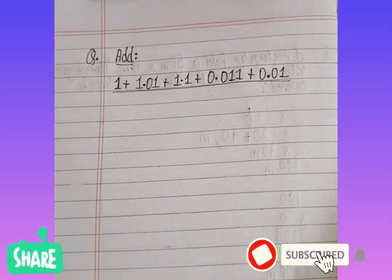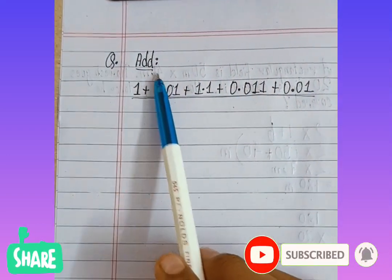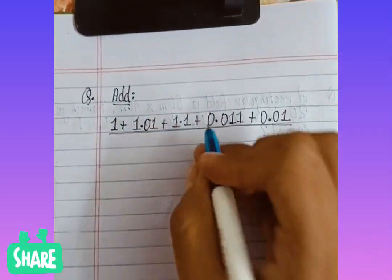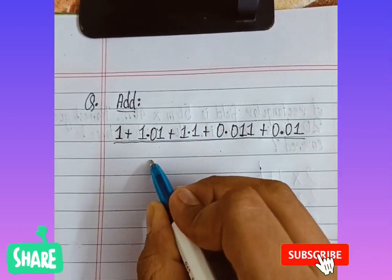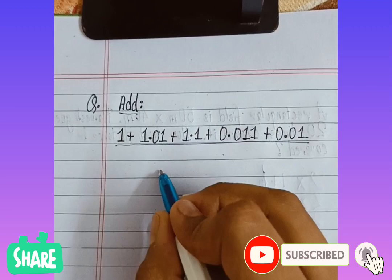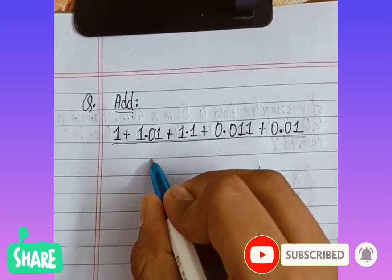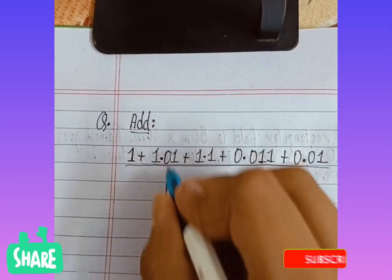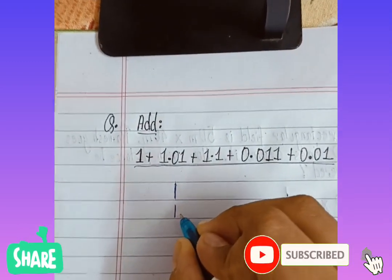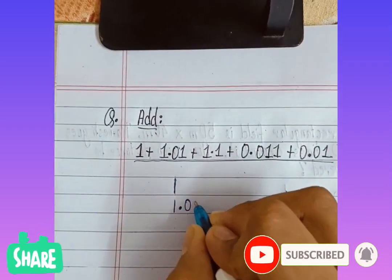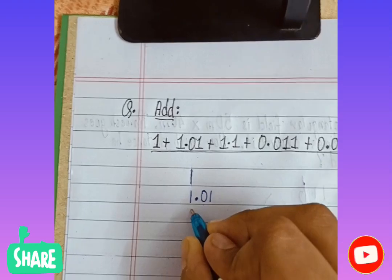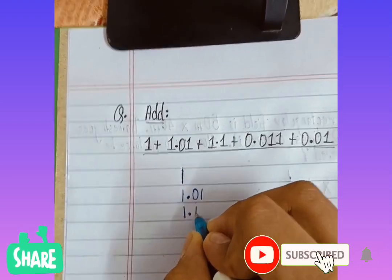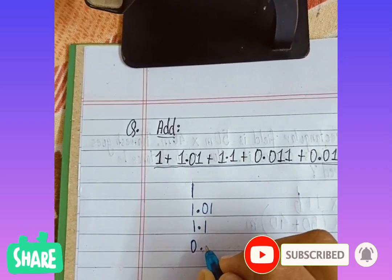So friends, today we will add some decimals and we'll learn how to add. So first, write one as the whole number, then another number which is 1.01, then 1.1, 0...